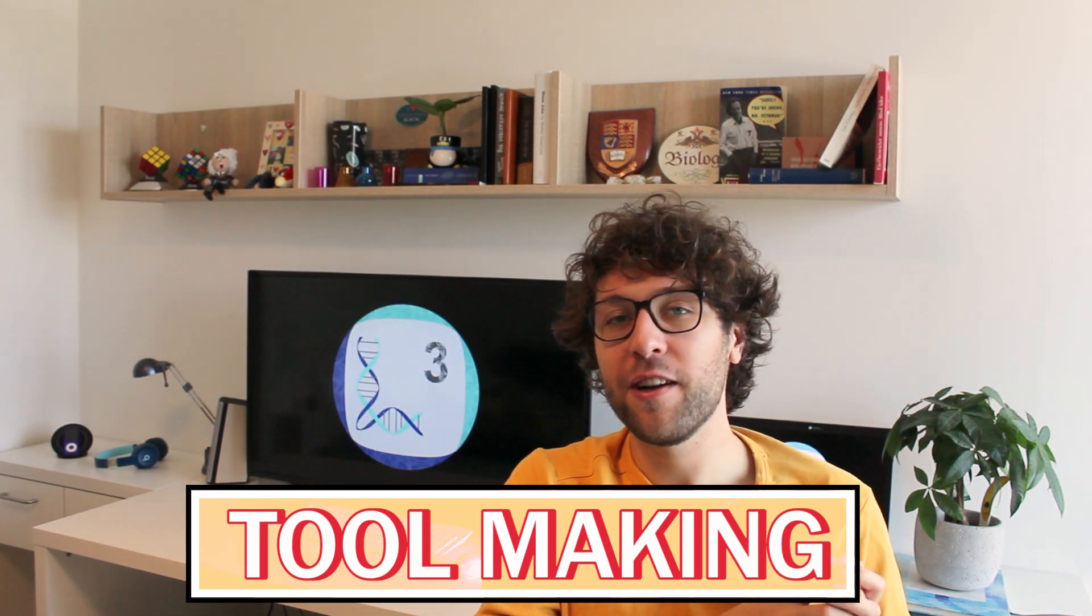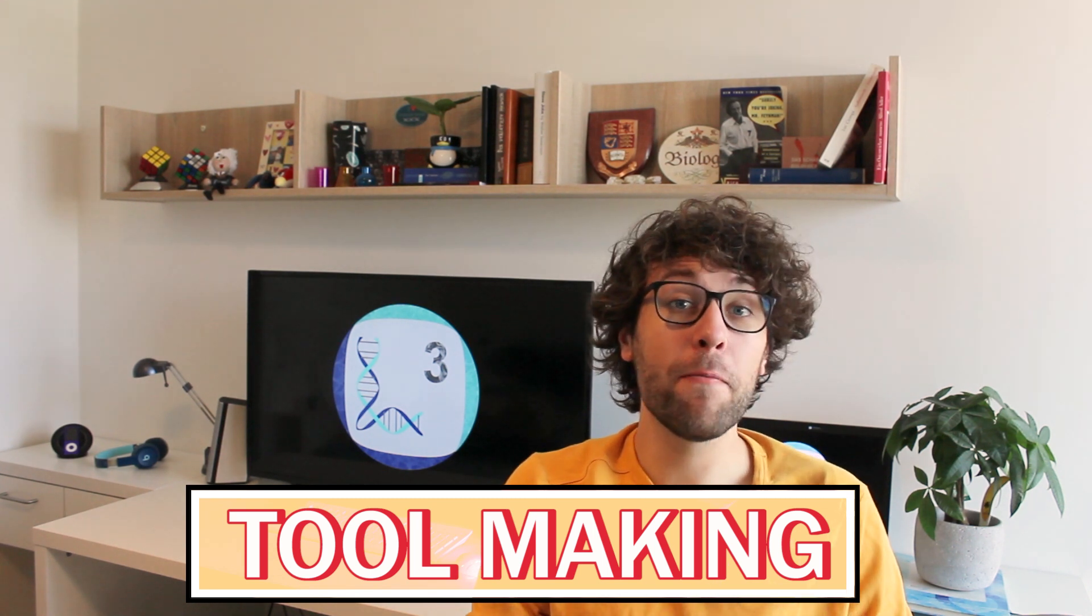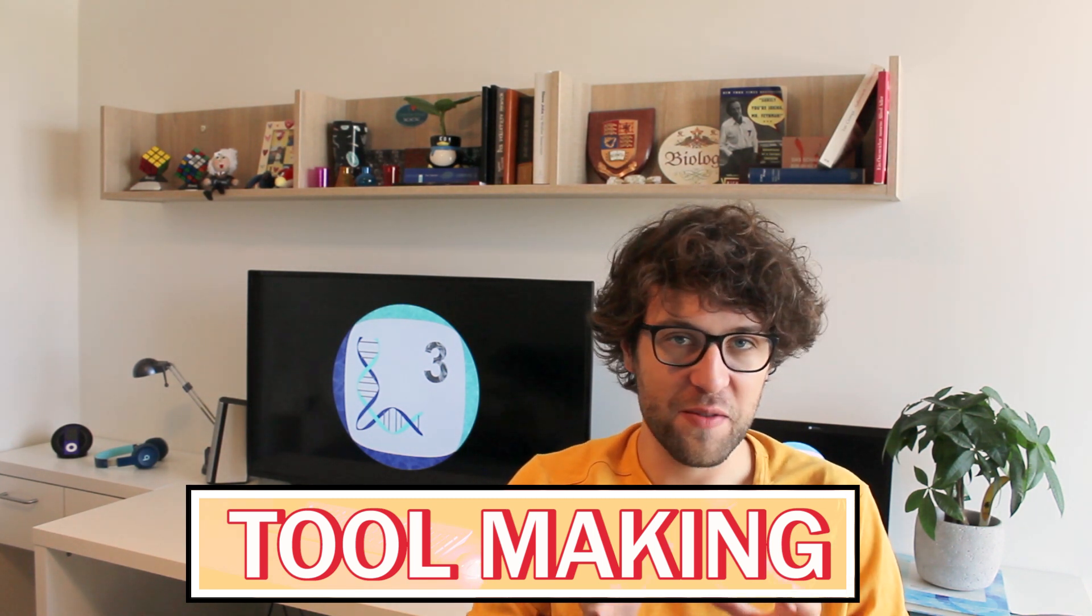But now back to Jane Goodall's original work. It was also at the time that she made one of the most important discoveries in animal behavior. David Greybeard and another chimpanzee stripped leaves from sticks to collect termites. This was the first time that a researcher observed that animals manipulate objects in order to make tools. This ability to make tools has since been recognized in other animals including crows, elephants, dolphins or sea otters.